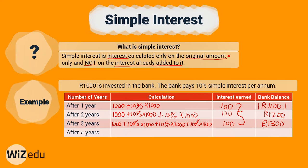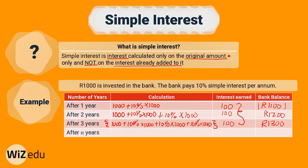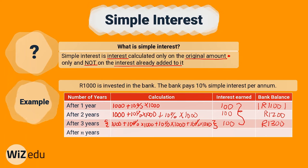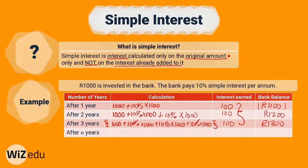It seems a bit tedious to be performing these long calculations when you want to find out how much you would have earned after a certain number of years. So is there an easier formula we can use? Let's consider N years — what would our balance look like after N years?